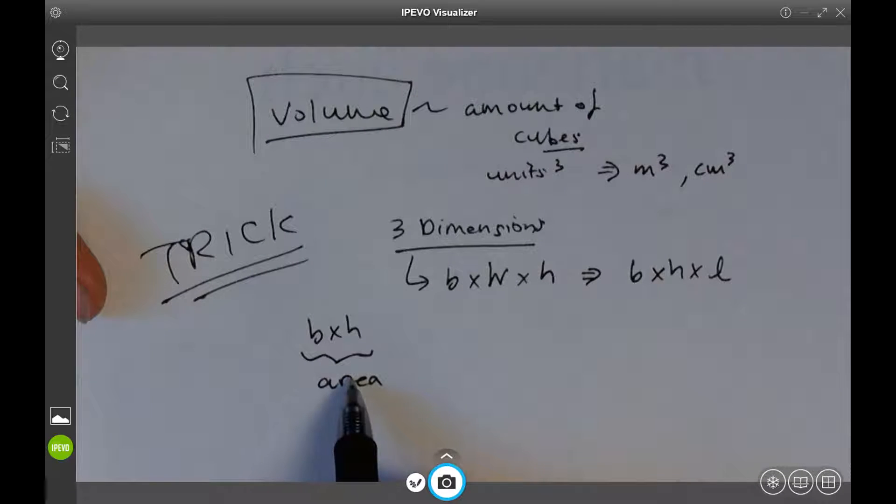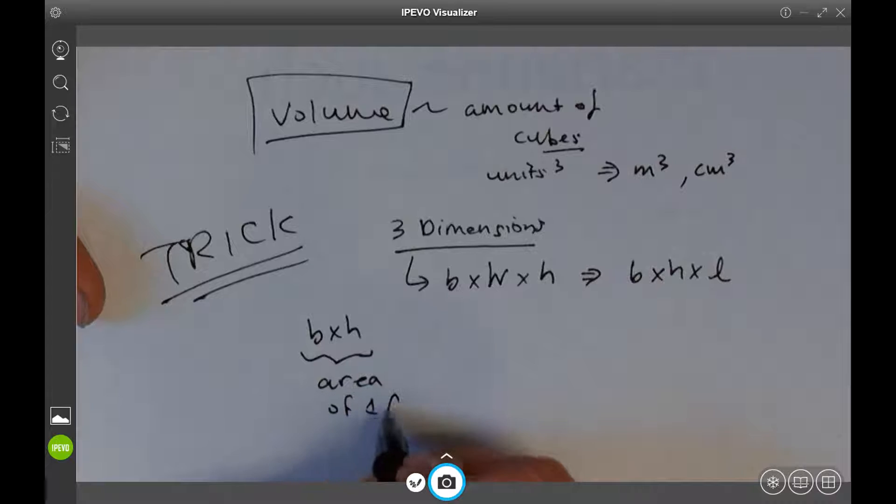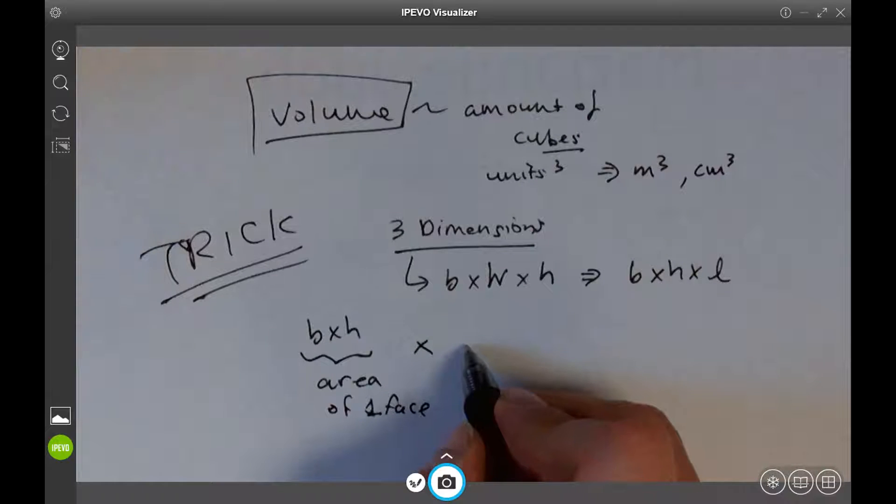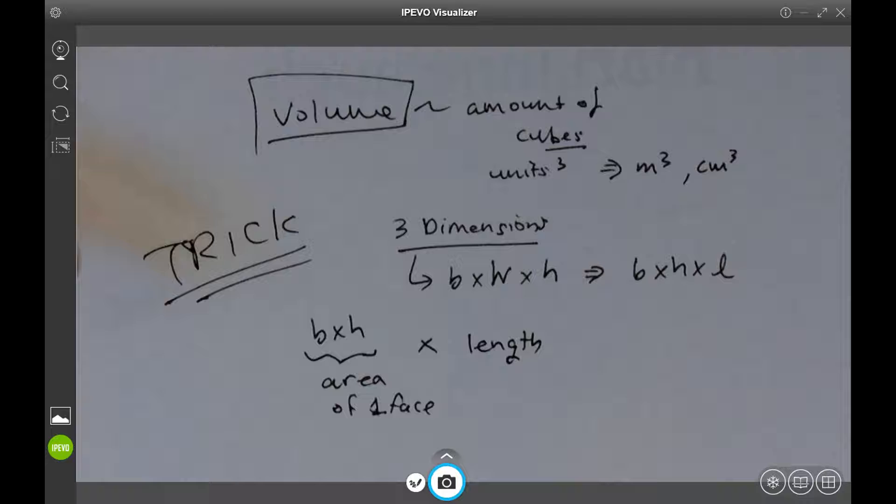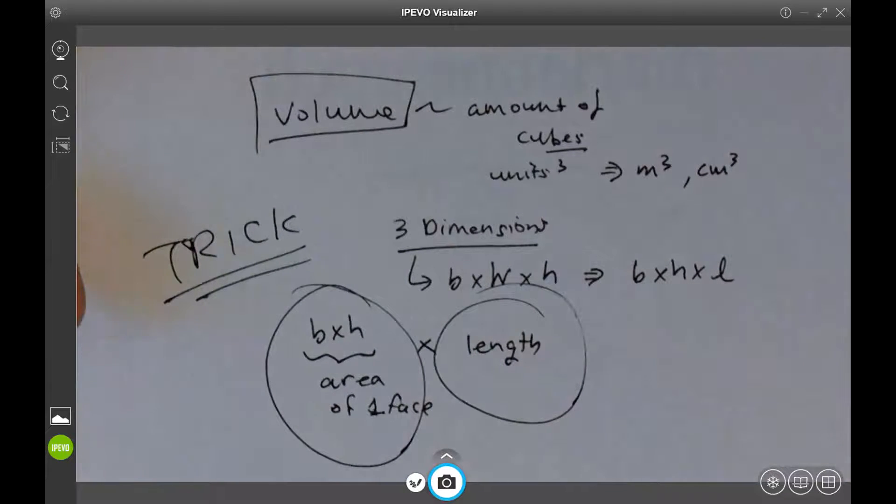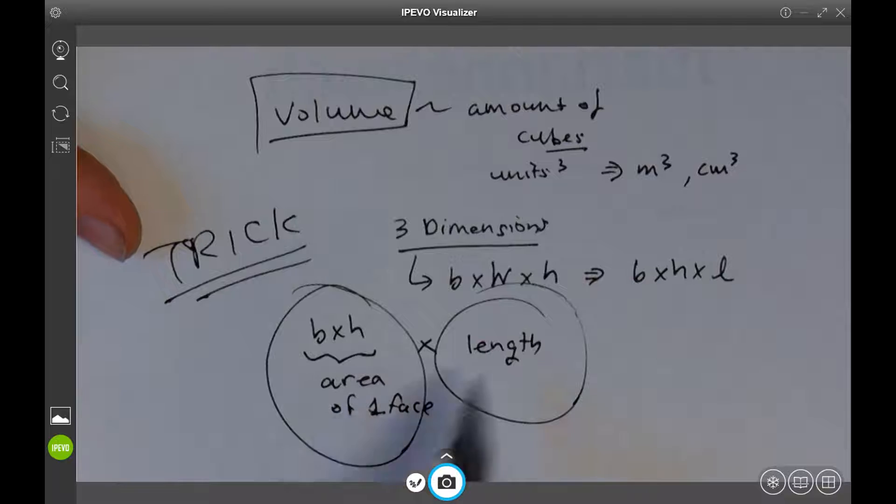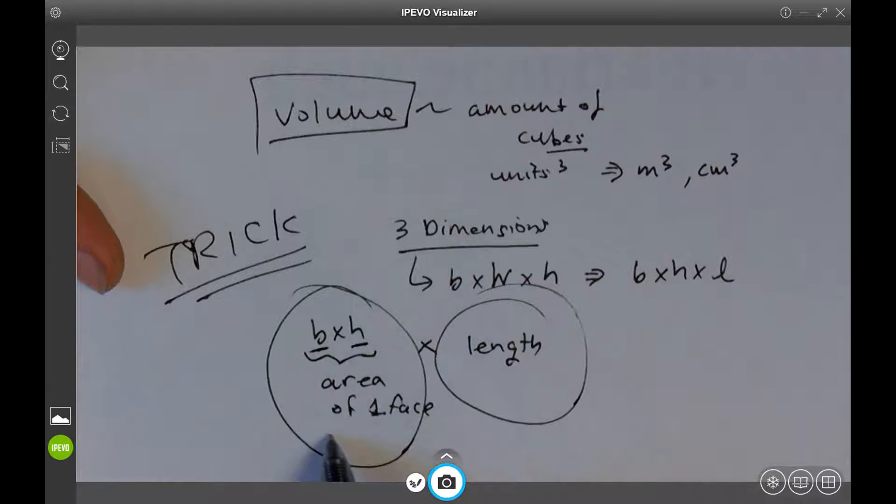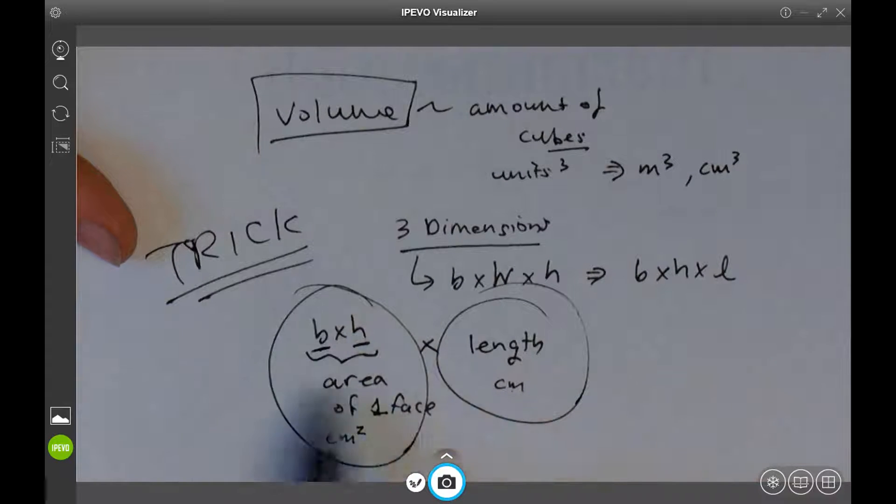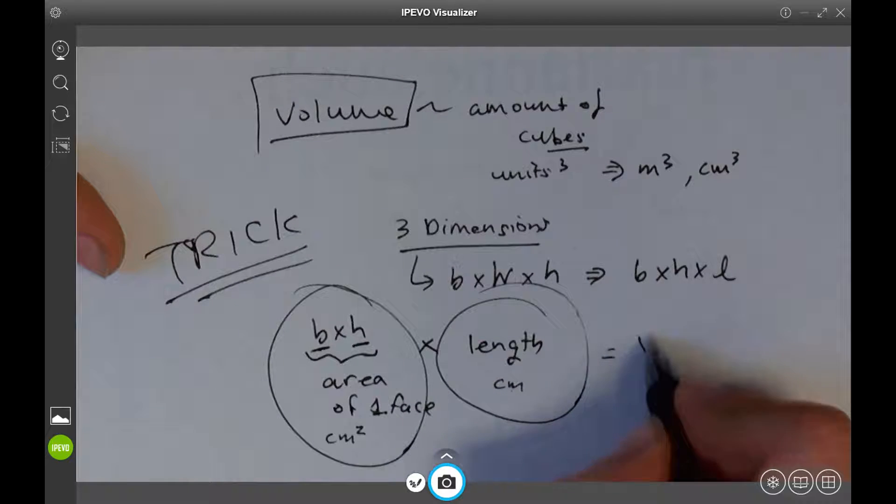So what you're doing is finding the area of one face, then you multiply it by width or length, however you want to call it. The area of a face times by the length - that is volume. This is a trick to help you. Now I know that's not three dimensions, but the three dimensions are in the area. Area is two dimensions, right? Centimeters squared times the length would be the third. So here we have two dimensions times by one dimension equals volume, which is three dimensions.